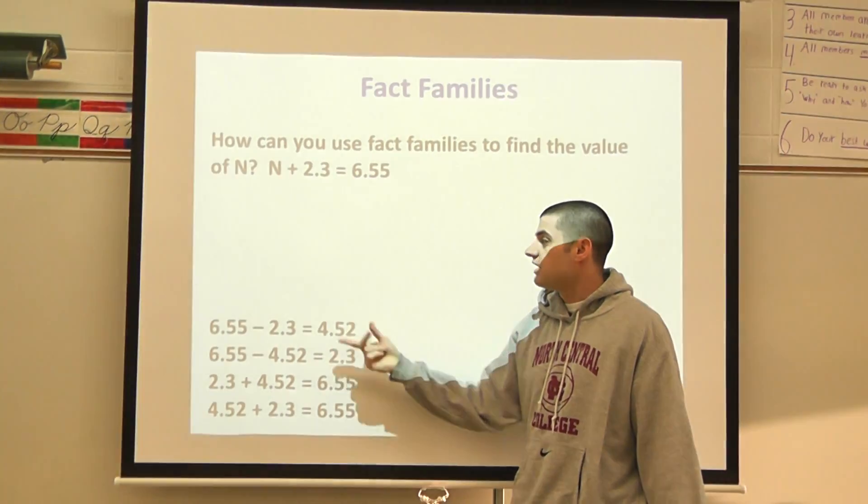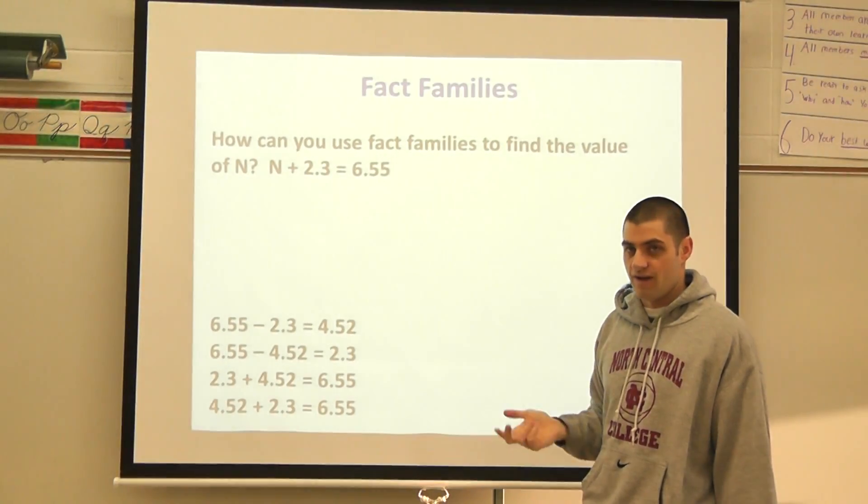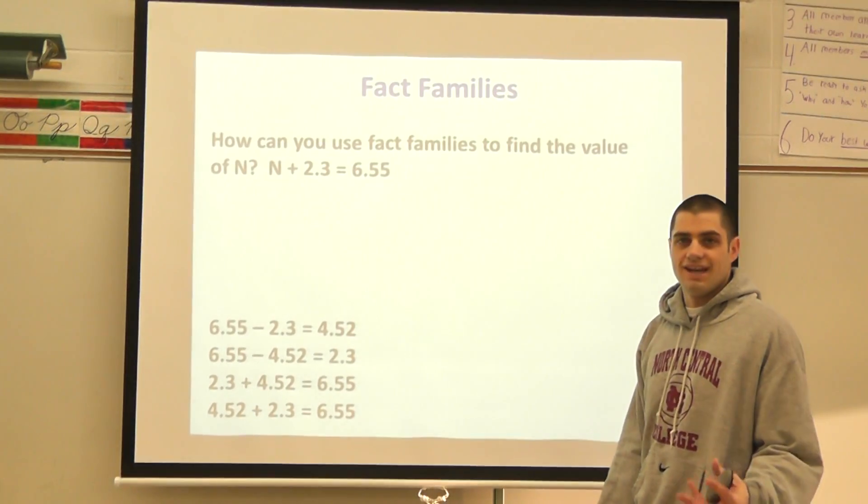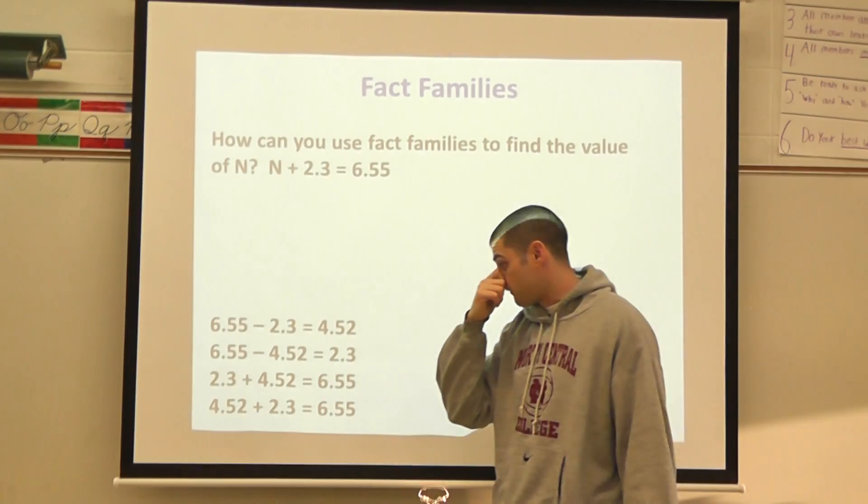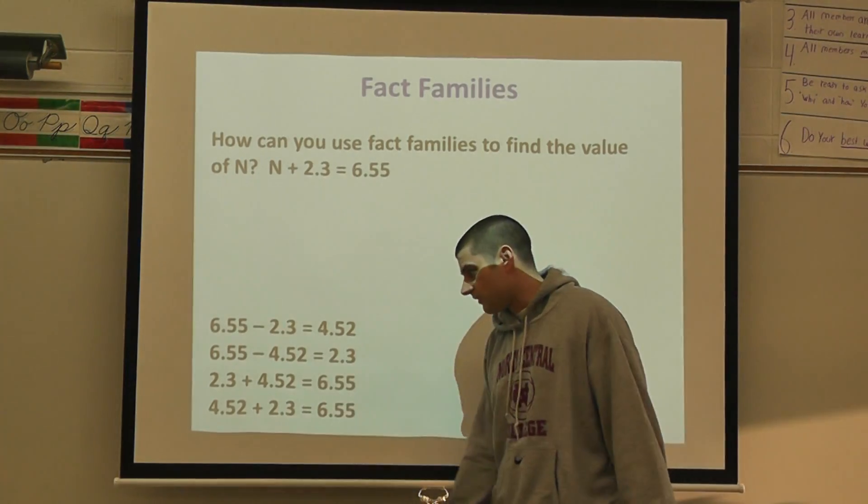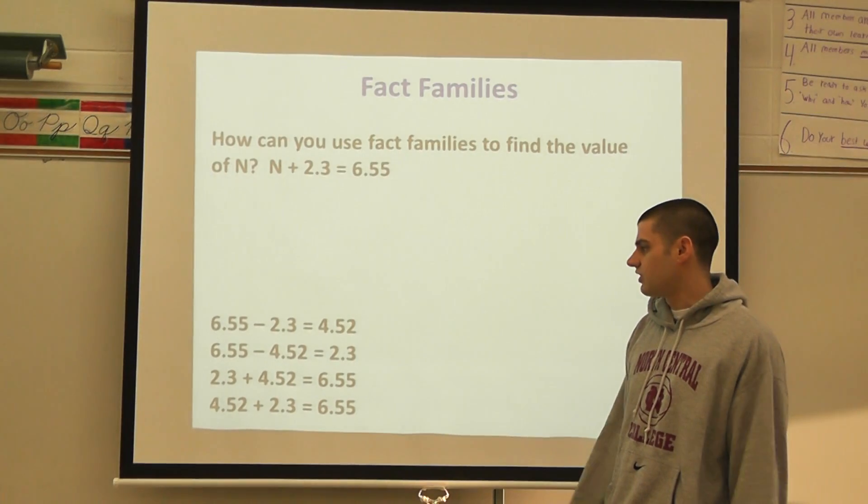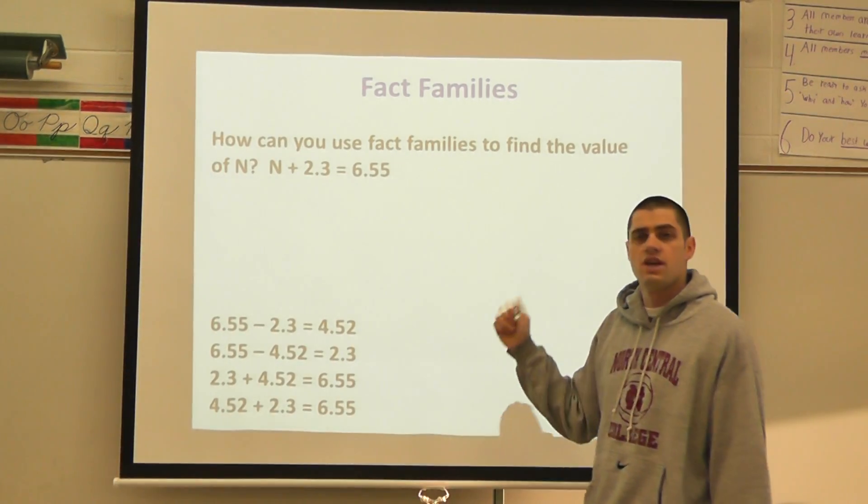So again, I took two of the three parts that I knew, I used some of my prior knowledge about fact families, and I used it to find the value of N. Now to test it, I can test it all four ways. I can also do 6.55 minus 4.52, which is going to equal 2.3, or if you put 2.30 it's the same thing.